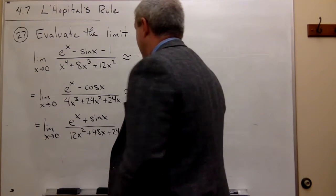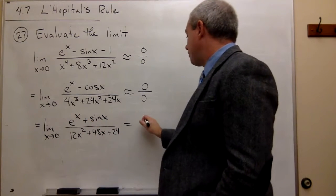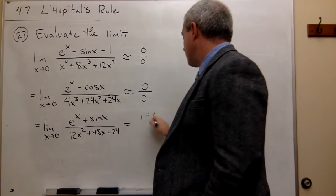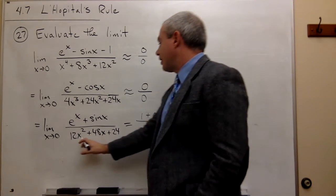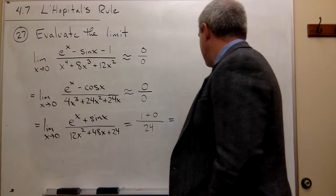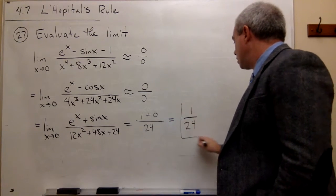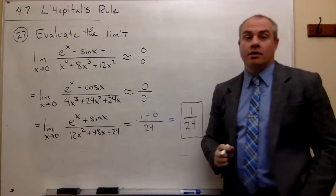And if I plug things in at this point, which I am able to do, I get 1 plus 0 on top, which is 1. And on the bottom, I get 0 plus 0 plus 24, or 24. So the answer to this problem is 1 over 24. And I'm done.